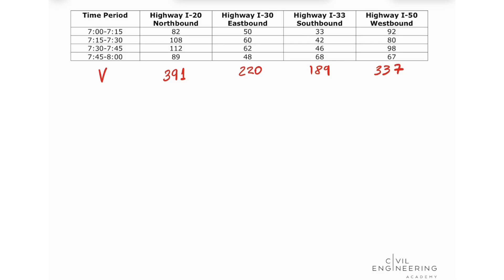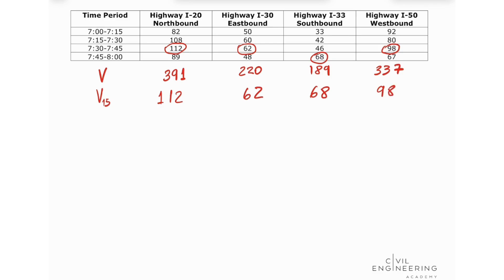Now I'm going to find the greatest 15-minute period volume for each location. For I-20 the greatest is 112, then 62, 68, and 98 for the remaining locations.